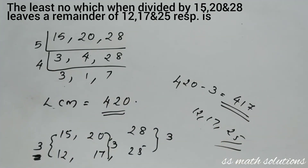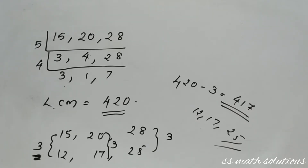So the answer is 417. To summarize: when we need the least number for exact division we use LCM, but when remainders are given, we find the common difference between divisors and remainders, then subtract it from the LCM.